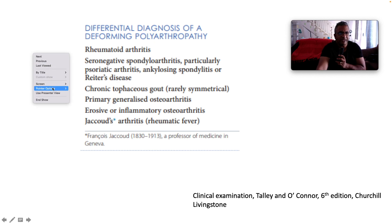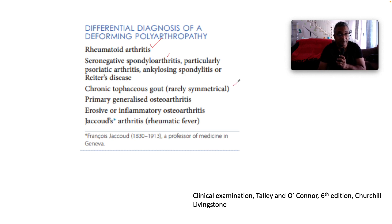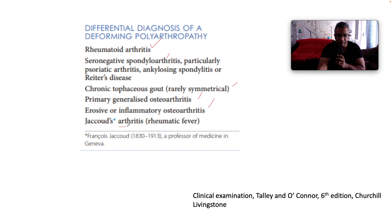Looking at the differential diagnosis for a deforming polyarthropathy: rheumatoid arthritis is the poster child, but we also include spondyloarthropathies — particularly ankylosing spondylitis and reactive arthritis. Chronic tophaceous gout, which is rarely symmetrical — the tip-off for gout is it's usually asymmetrical. Primary generalized osteoarthritis, erosive or inflammatory osteoarthritis, and Jaccoud's Arthropathy, which is the topic for today.